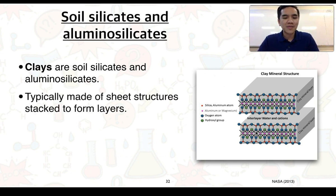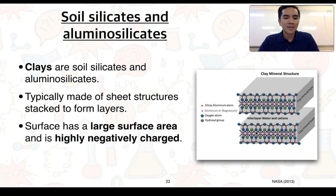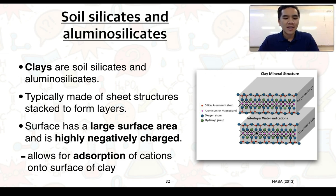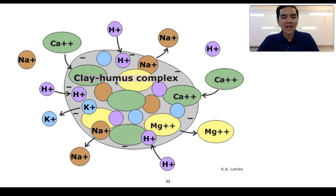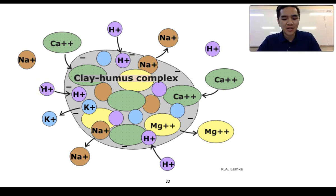Clay particles typically are made up of sheet structures which are stacked to form layers. The surface of these layers typically have a very large surface area and are also highly negatively charged. This allows for the absorption of cations onto the surface of clay. This picture shows the structure of a clay or soil particle — we can see the extremely negatively charged surface and the absorption of positively charged cations onto it. The absorption of cations provides nutrients to the roots of plants that won't be leached away.